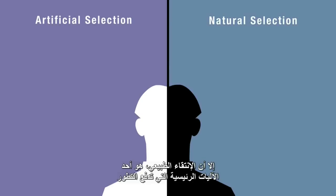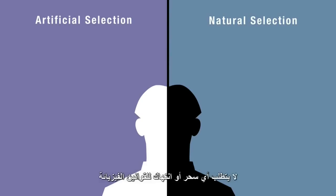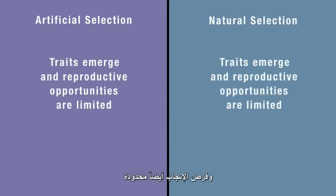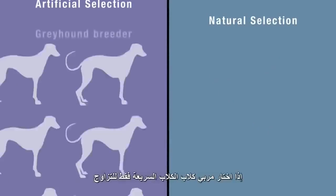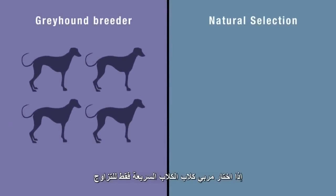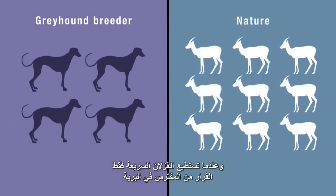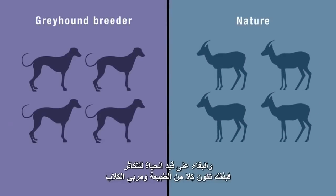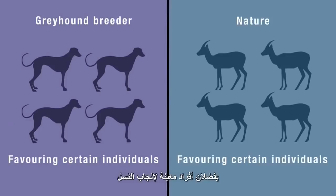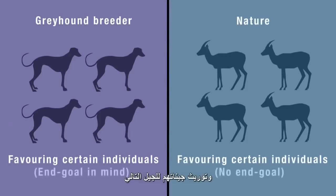And yet natural selection, one of the major mechanisms that drives evolution, requires no magical suspension or violation of physical laws. It simply says that traits also emerge, and reproductive opportunities are also limited because of factors other than human influence. If a greyhound breeder selects only the fastest dogs for breeding stock, and in the wild only the fastest gazelles outrun their predators and survive to reproduce, then both nature and the greyhound breeder are favouring certain individuals for reproducing offspring and passing on their genetic information to the next generation.